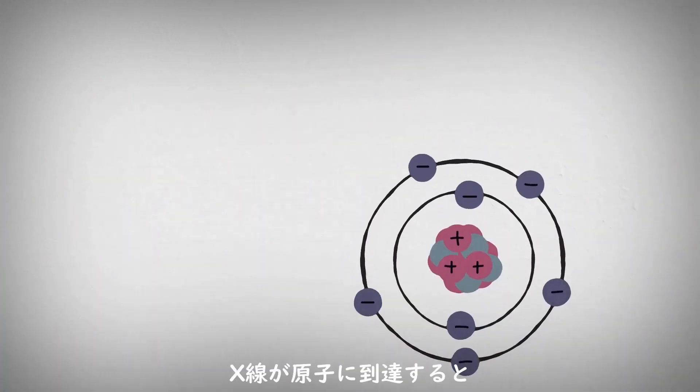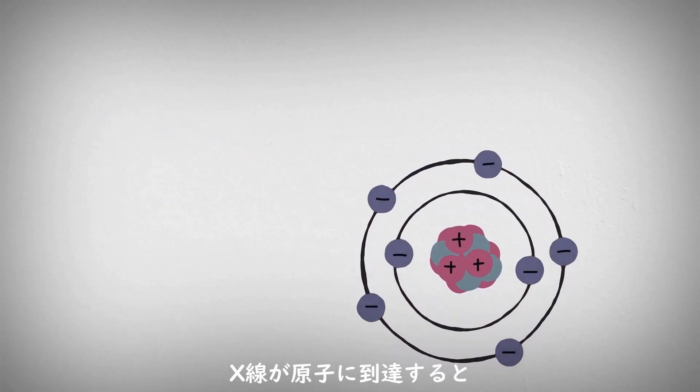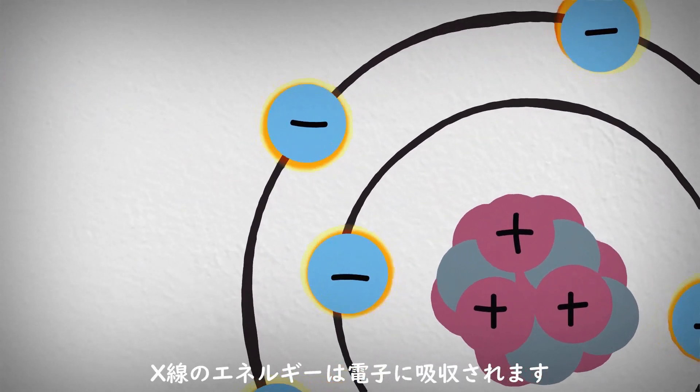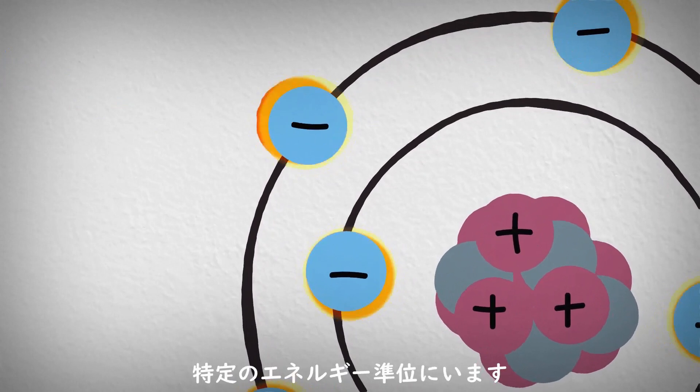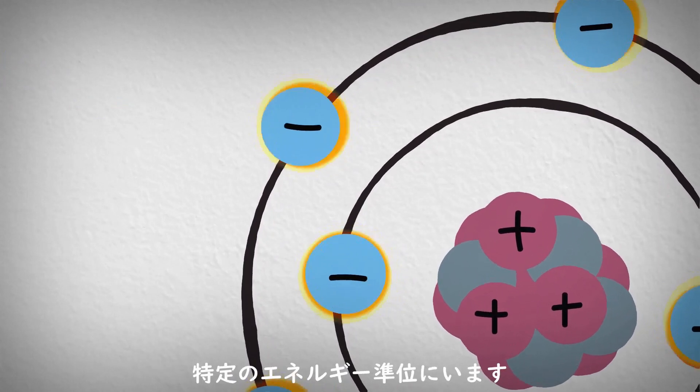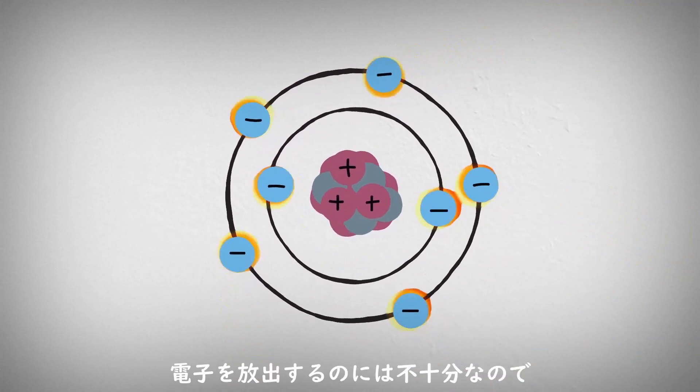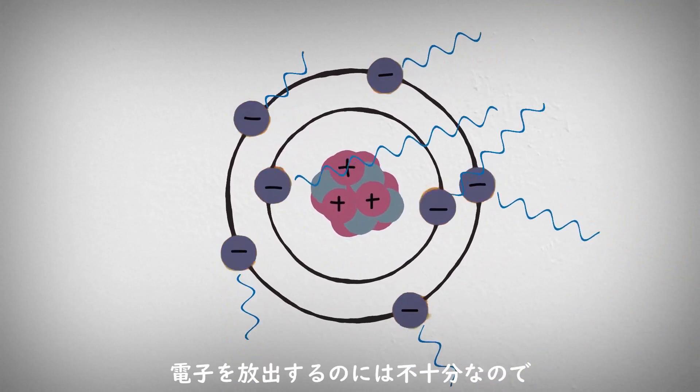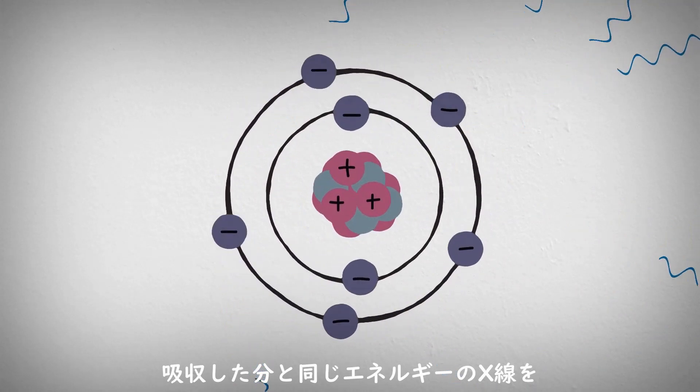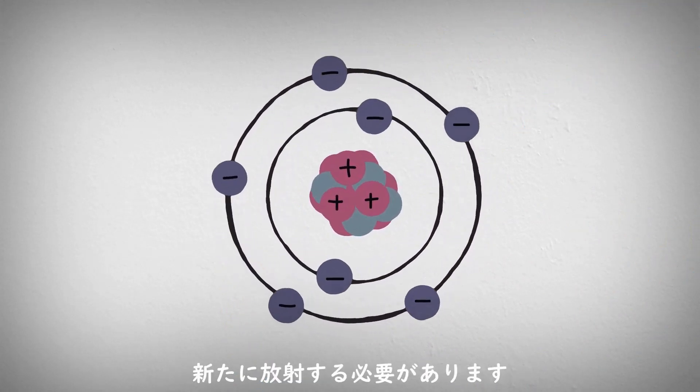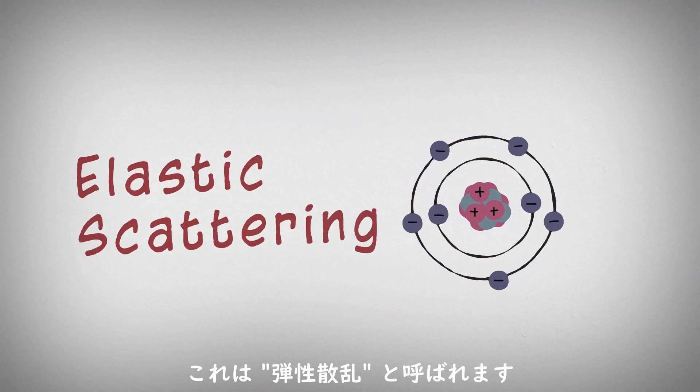When an X-ray encounters an atom, its energy is absorbed by the electrons. Electrons occupy special energy states around an atom. Since this is not enough energy for the electron to be released, the energy must be re-emitted in the form of a new X-ray with the same energy as the original. This process is called elastic scattering.